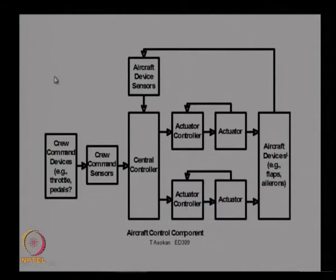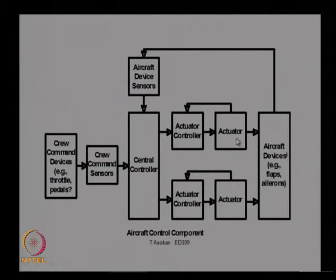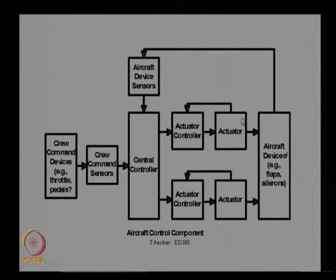Another way of representing the generic architecture is shown for an aircraft component. Generic names are given without specifying particular elements — for example, crew command devices, crew command sensors, central controller, aircraft device sensors, actuator controller, actuator, and aircraft devices. We do not specify what kind of sensor, actuator, or controller is being used. Based on this generic architecture, we then move to the next level where actual components replace generic names — that is the instantiated architecture.